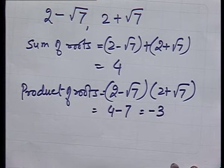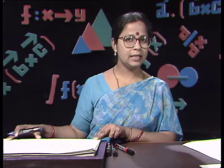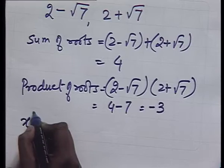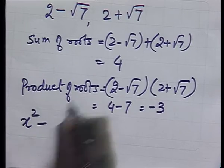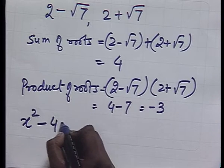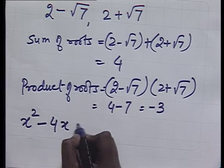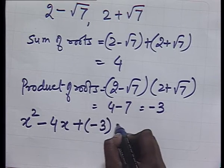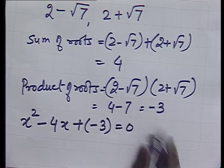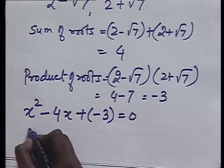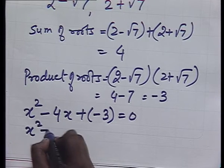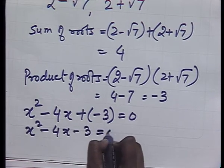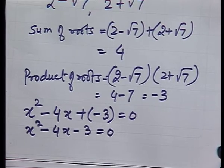Hence, as per our earlier result, the equation becomes x² - (sum of roots)x + (product of roots) = 0, that is x² - 4x + (-3) = 0, or x² - 4x - 3 = 0.